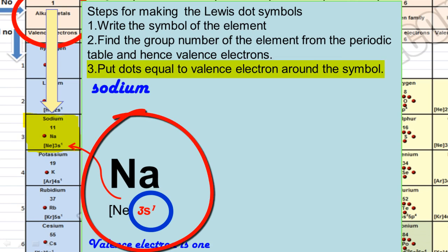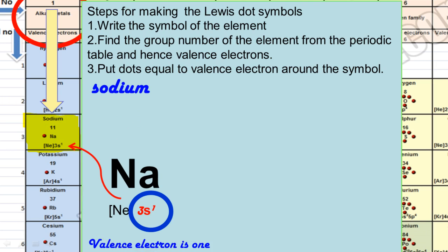In the third step, we are going to put dots around the symbol of the element to represent its valence electrons. In sodium there is one valence electron, so only one dot. This is the Lewis dot symbol of sodium element.